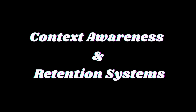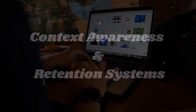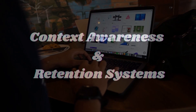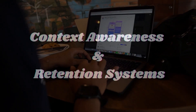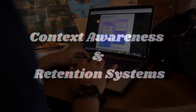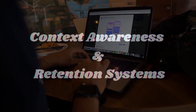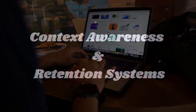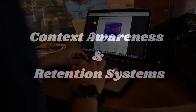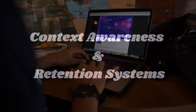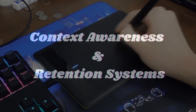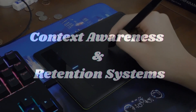Stage 2: Context Awareness and Retention Systems. Moving a step beyond rule-based AI systems, we arrive at Context Awareness and Retention Systems. This stage represents a significant evolution in Artificial Intelligence. These AI systems are capable of understanding and retaining context, meaning they can remember previous interactions and use that knowledge to inform future responses.